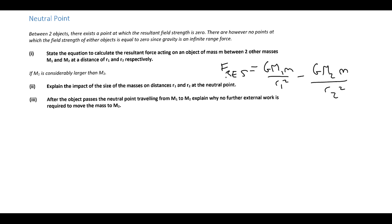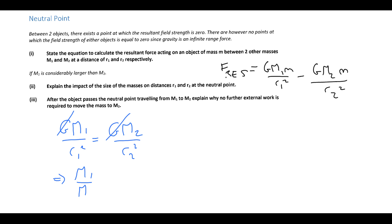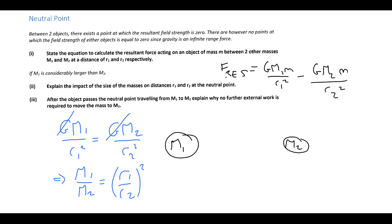To explain the impact of mass sizes on the distance to the neutral point: at the neutral point, the field strengths are equal. Cancelling G from both sides and rearranging gives M₁/r₁² = M₂/r₂². If M₁ is much larger than M₂, then R₁ is much bigger than R₂, meaning the neutral point is much closer to M₂, the smaller planet.